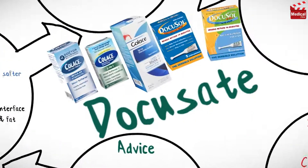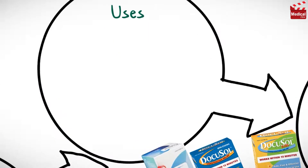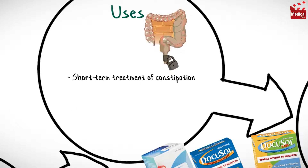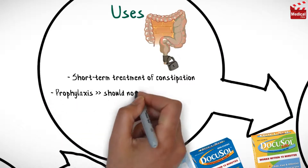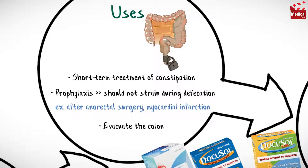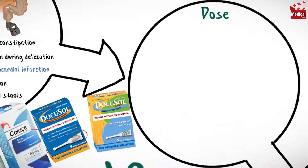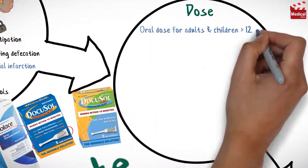Docusate is available as capsules and tablets, syrup, and enema. It is used in the short-term treatment of constipation, prophylaxis in patients who should not strain during defecation — such as after anorectal surgery or myocardial infarction — also used to evacuate the colon for rectal and bowel examinations, and for prevention of dry, hard stools.